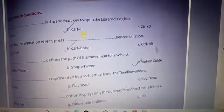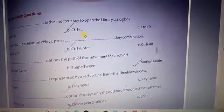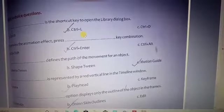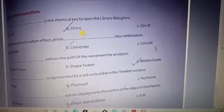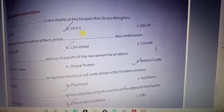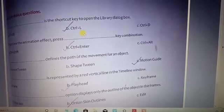By using motion guide, we can provide movable steps to a particular drawing or animated thing. Next one: Playhead is represented by a red vertical line in the timeline window.